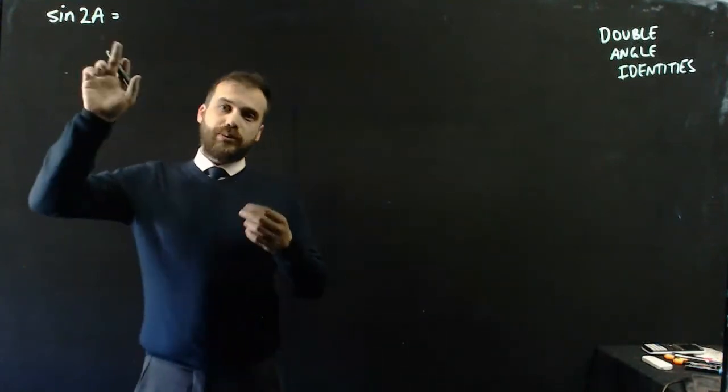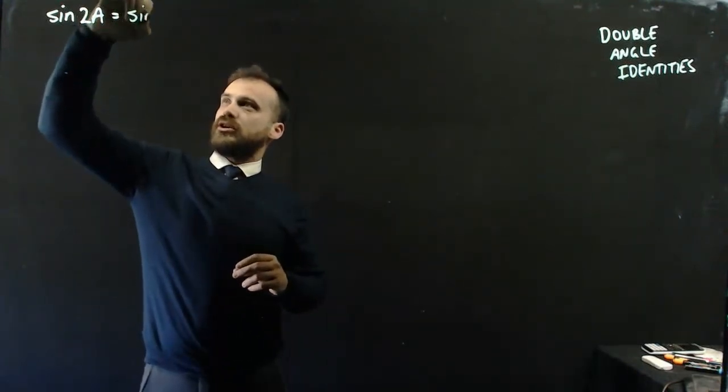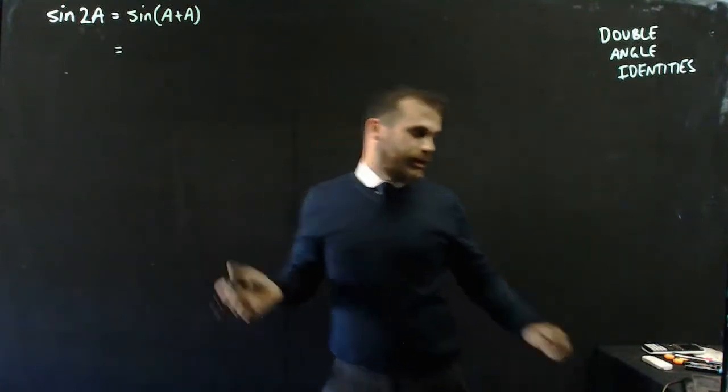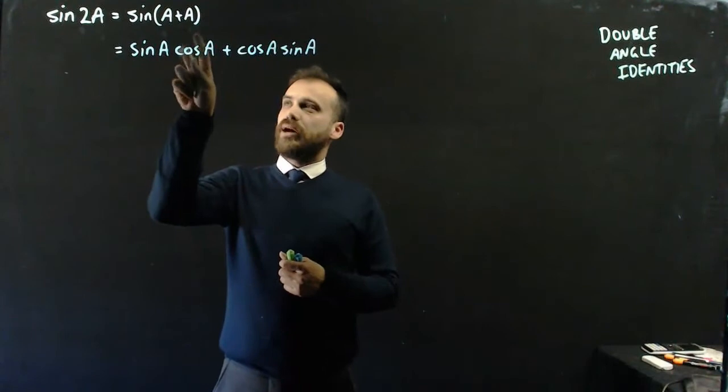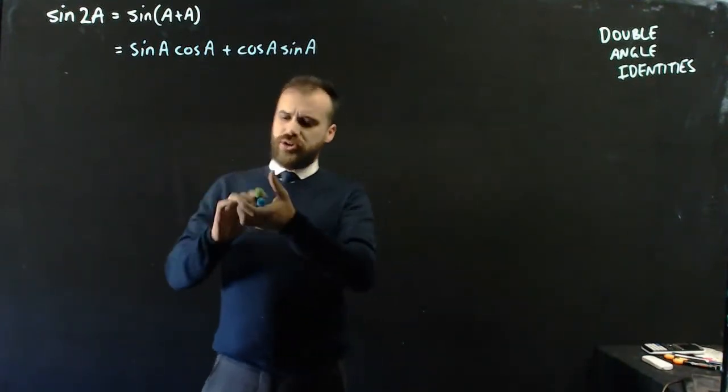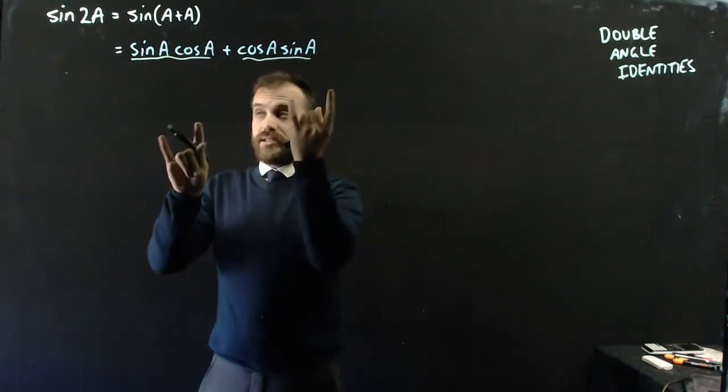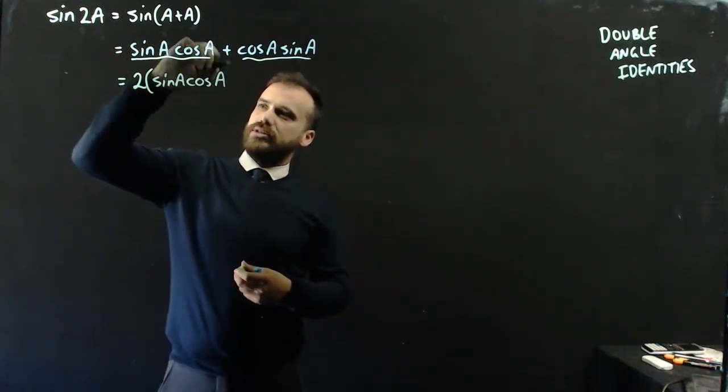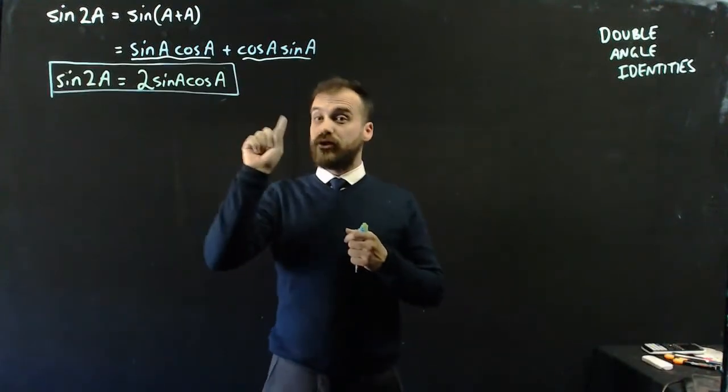Sine 2A, this is what we mean by double angle identity. 2A is double angle. We can rewrite that as an angle sum, which is sin(A+A). Then we can simply use our angle sum identity. This is the specific one applied in the angle sum identity. Because usually it's A plus B, but because it's A plus A, we put the A in here and we put this A in here. Sin(A)cos(A) plus cos(A)sin(A). These are like terms, right? Sin(A)cos(A) and cos(A)sin(A) are equivalent, which means that we end up with two lots of sin(A)cos(A). That leads us to this, our first double angle identity: sin(2A) equals 2sin(A)cos(A).